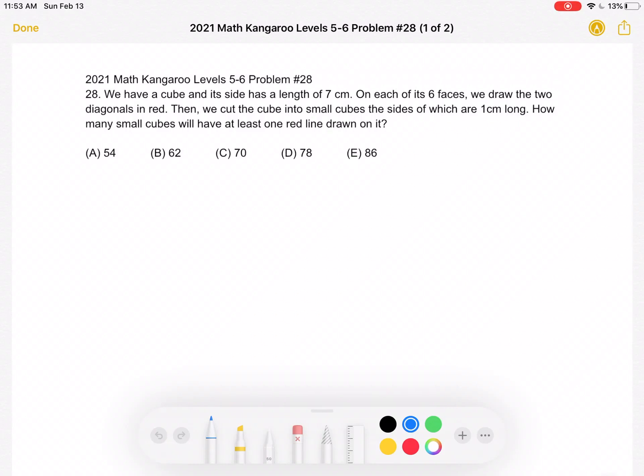This is the 2021 Math Kangaroo Levels 5-6 Problem Number 28. We have a cube and its side has a length of 7 centimeters. On each of its six faces we draw the two diagonals in red. Then we cut the cube into small cubes, the sides of which are 1 centimeter long. How many small cubes will have at least one red line drawn on it?